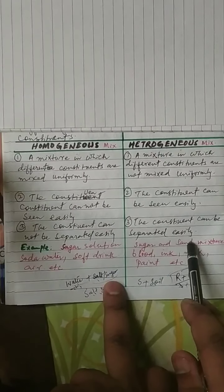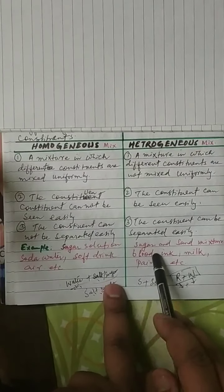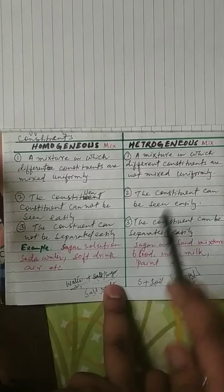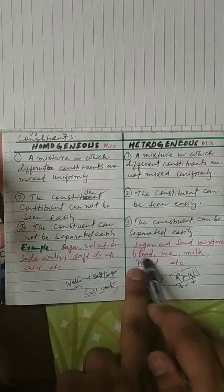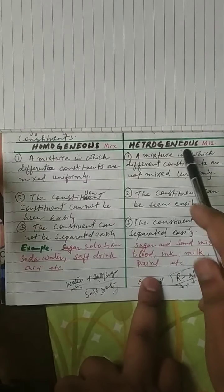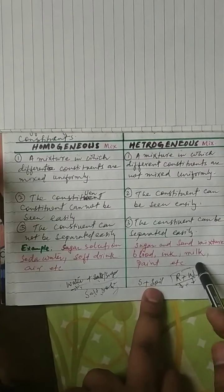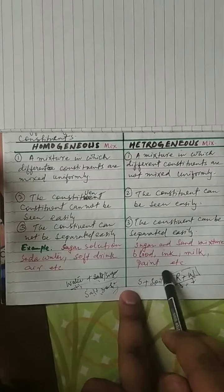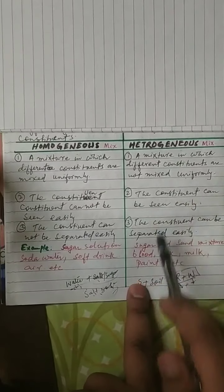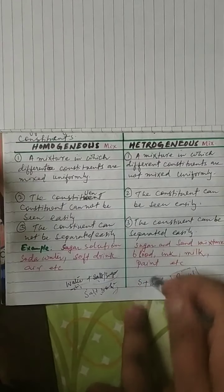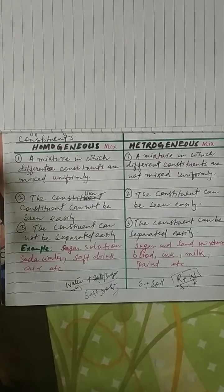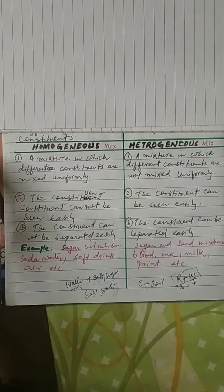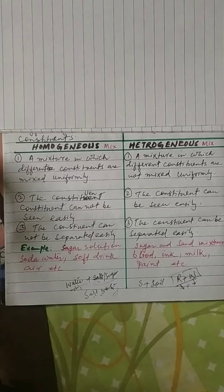Examples of heterogeneous mixtures include a mixture of sugar and sand, blood, ink, milk, and paint. Hope you understand the topic. Thank you.